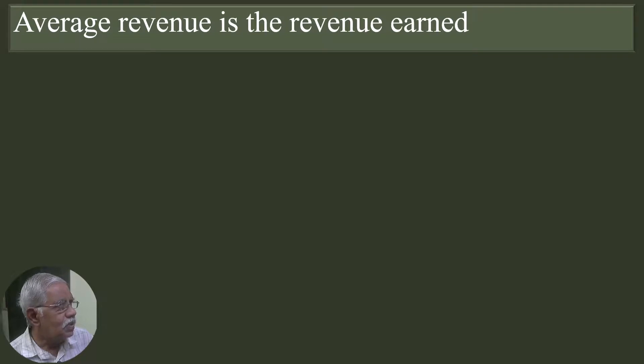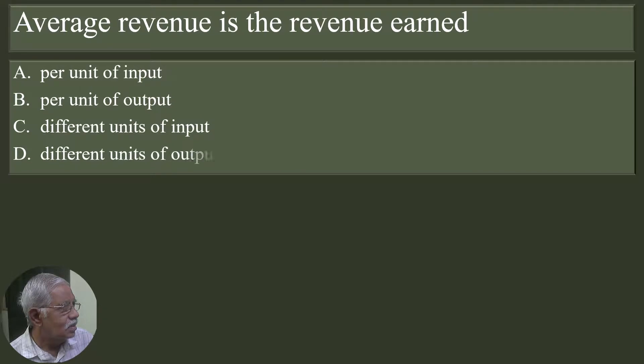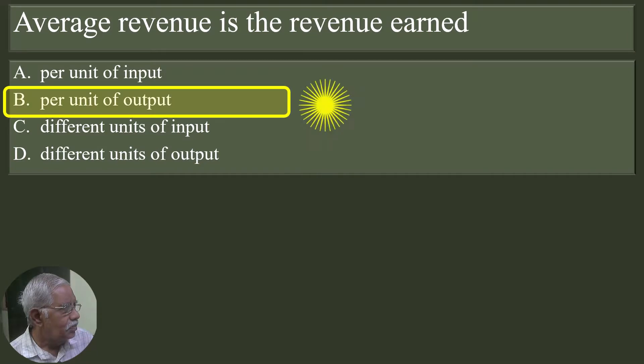Average revenue is the revenue earned per unit of input, per unit of output, different units of input, different units of output. Per unit of output is the correct answer.